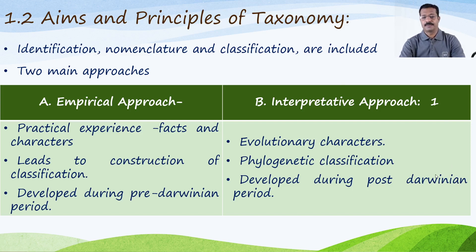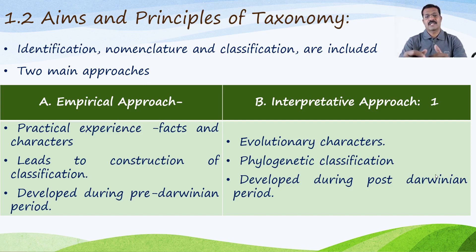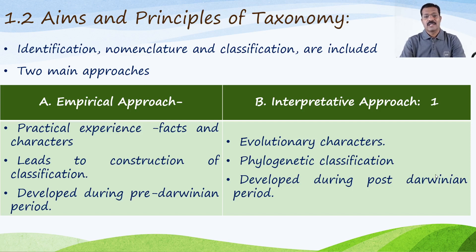The second approach is the interpretative approach. In this approach, the classification is constructed based on evolutionary characters, and this is called phylogenetic classification. The evolutionary characters — which plant is primitive, which plant is advanced — are taken into consideration. This approach was developed during the post-Darwinian period.